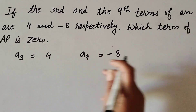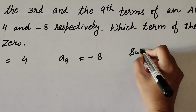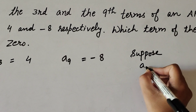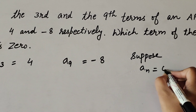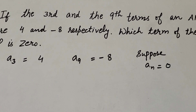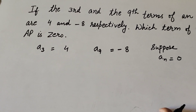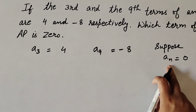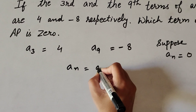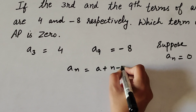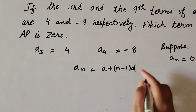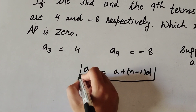We need to find which term of the AP is 0. So we suppose the nth term of the AP is 0, that is an equals 0. We know the formula to find the nth term: an equals a plus (n minus 1) times d. We use this formula to find the term that equals 0.